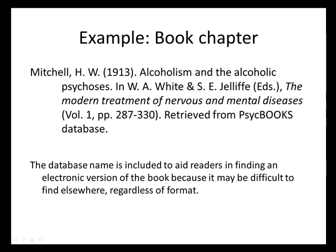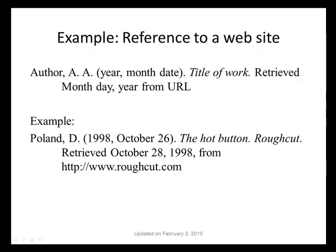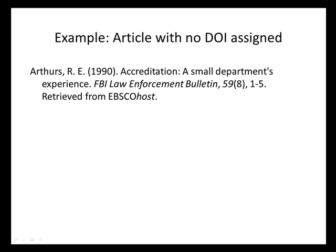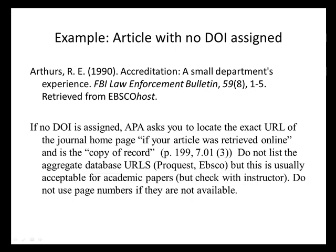For book chapters, we give the citation to the material that we actually use, which is a chapter of the book, and then we state the title and editors of the book. In this particular case, this classic book is widely available in a library database called CiteBooks, so the citation includes the information retrieved from CiteBooks. For citing websites, we include the date and the year if it is likely to change over time. This is how a journal article with a DOI number is cited — notice there is no period after the DOI number and DOI is in lowercase. If a DOI number is not assigned, it is appropriate to give either the journal homepage or the database from which you retrieved it.